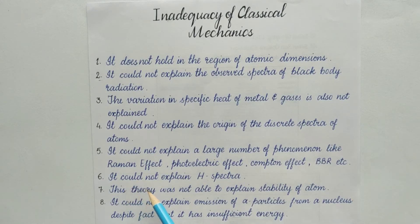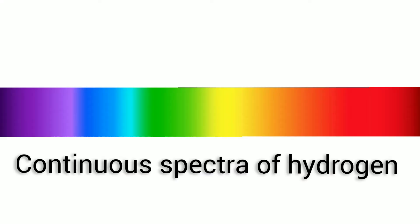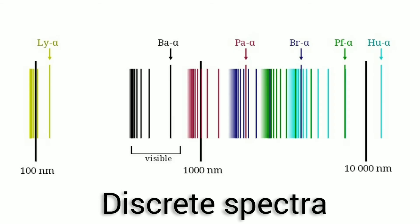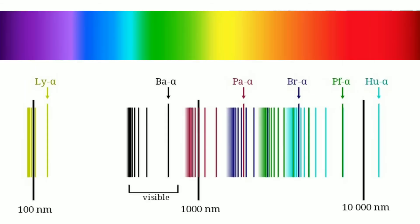Number six, it could not explain H spectra. According to classical mechanics, hydrogen shows continuous spectra like this. While we later observed that it is discrete line spectra and here too classical mechanics was failing to give reason.